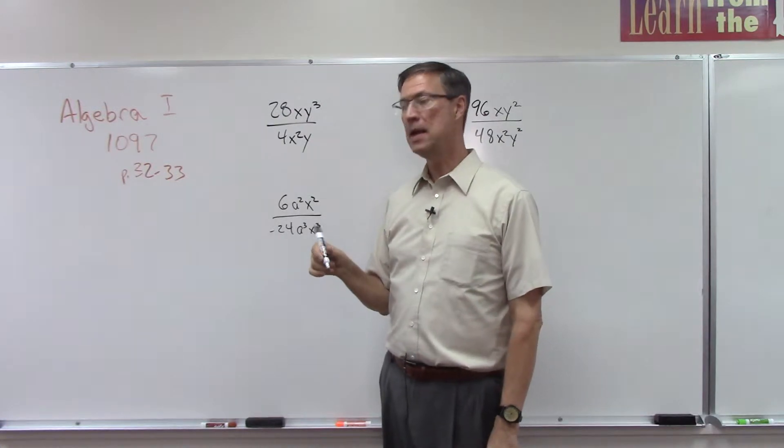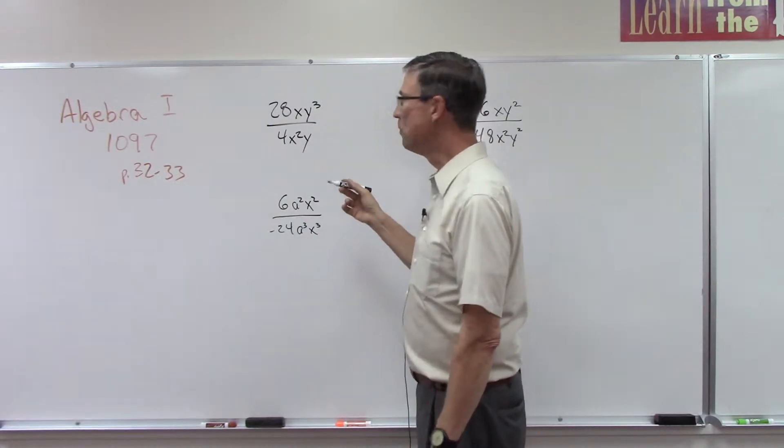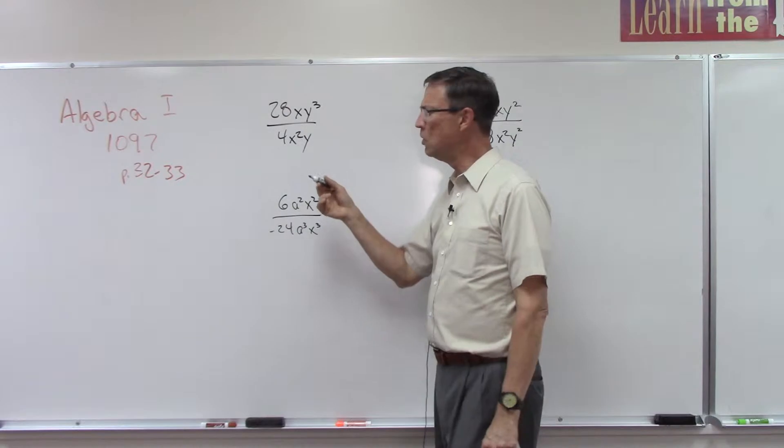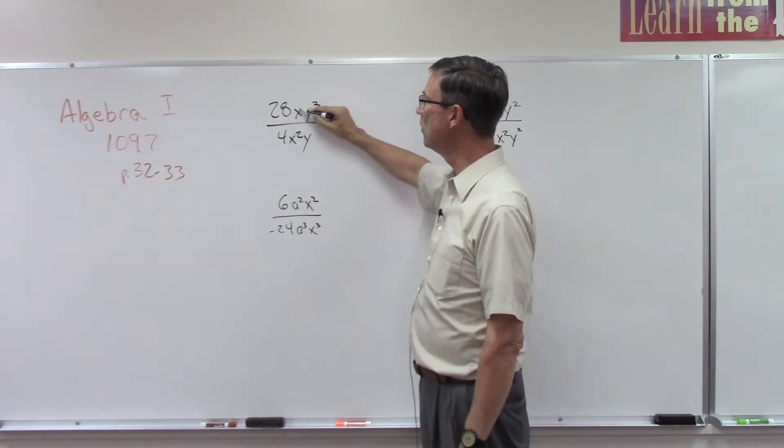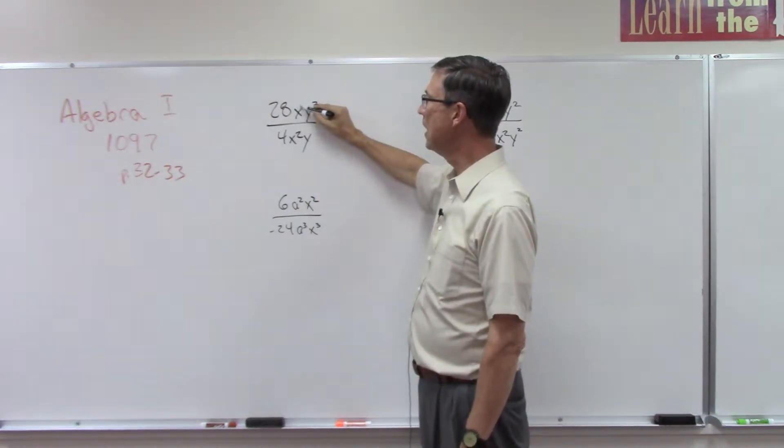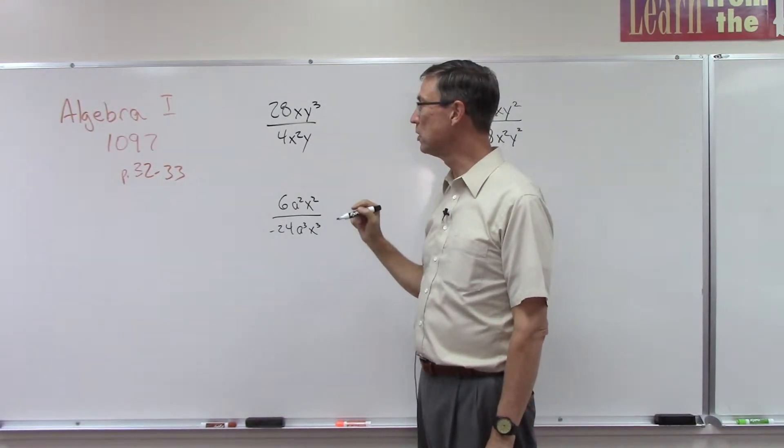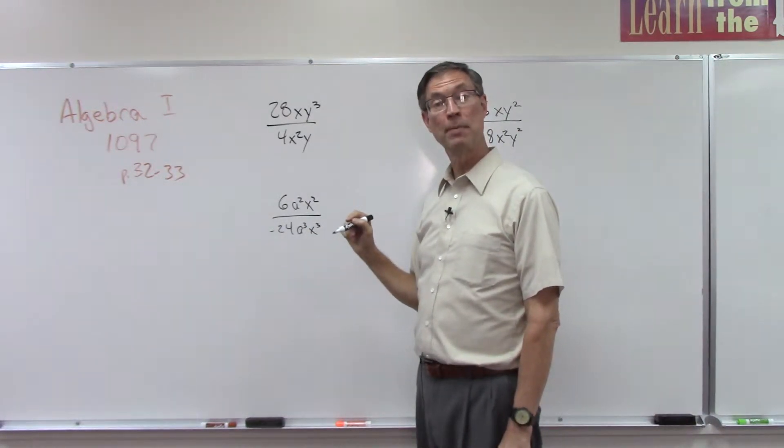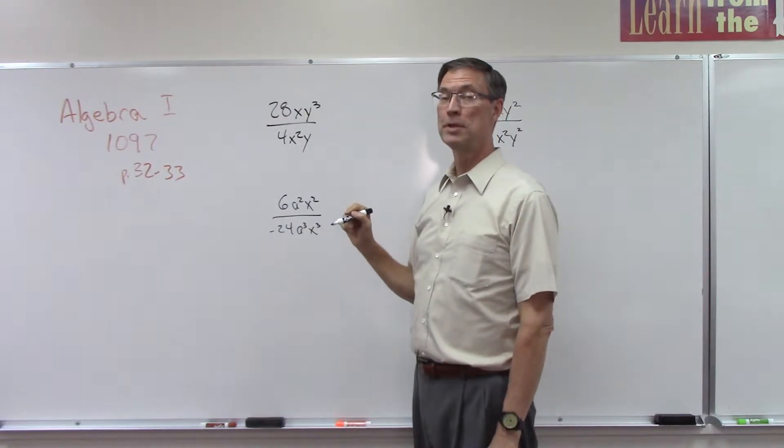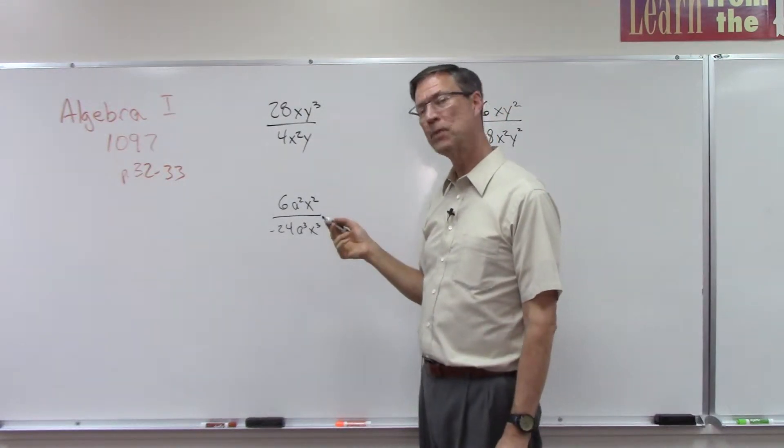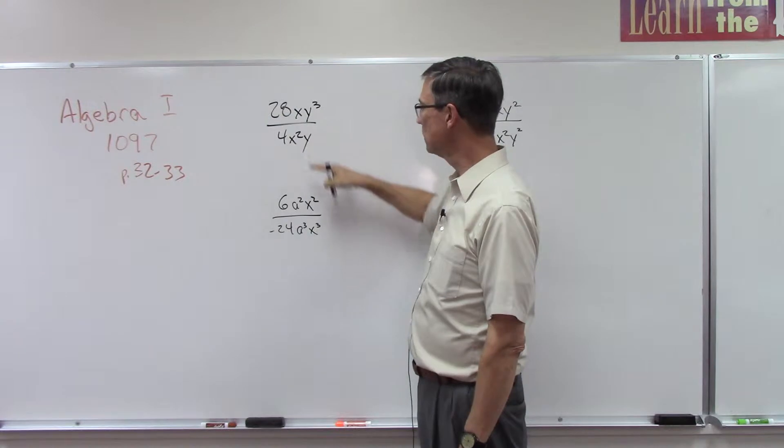In the previous lesson, we always took whatever the variable was on the top and subtracted the one on the bottom. But on that page, which was page I think 31, all the variables on the top had a bigger exponent than the one on the bottom.